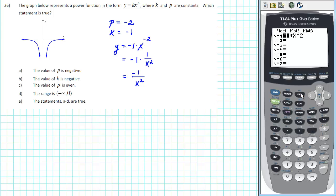So we're going to delete the negative on the k, and we're going to change our exponent back to -2, and then graph.